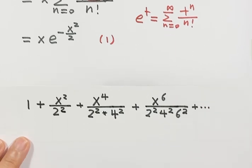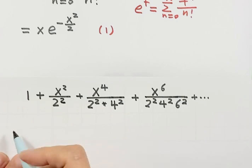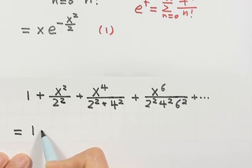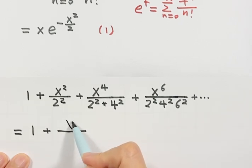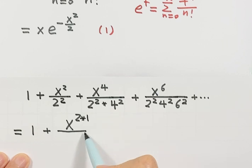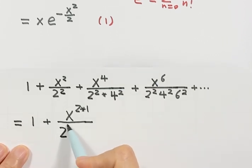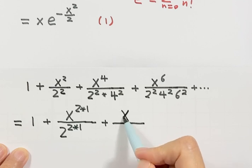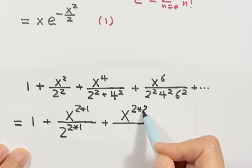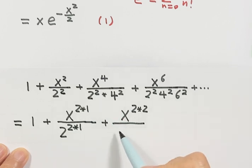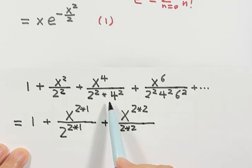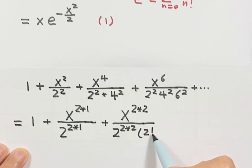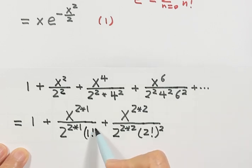This is the second part, so let's simplify it and figure out the general term. Here: 1 plus x squared written as 2 times 1, bottom 2 squared written as 2 times 1. The second term: x to the fourth written as 2 times 2. Take out 2 squared from each term, giving 2 squared times 2, and we still have 1 squared times 2 squared, so that's 2 factorial squared. So then here we put a 1 factorial squared.